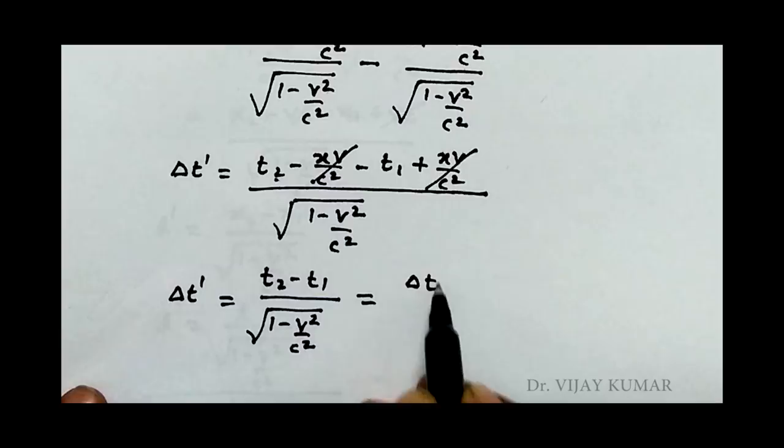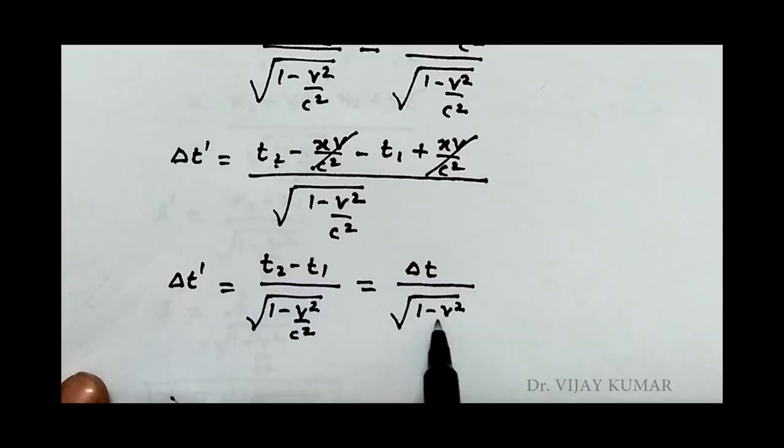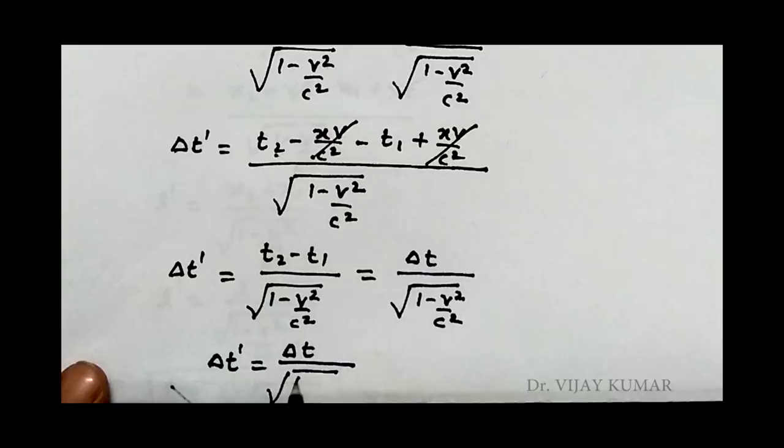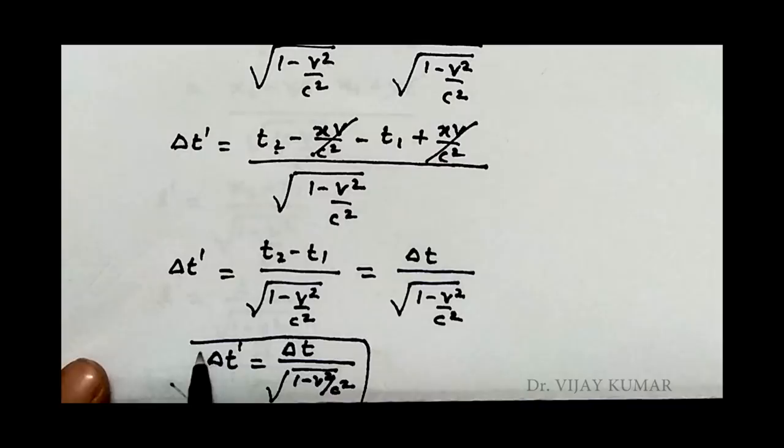Or we can say delta t dash equal to delta t upon under root 1 minus v square upon c square.